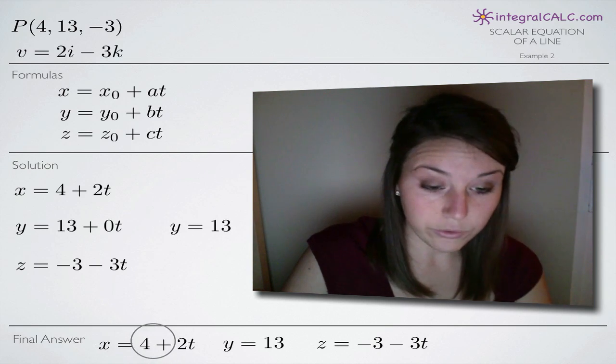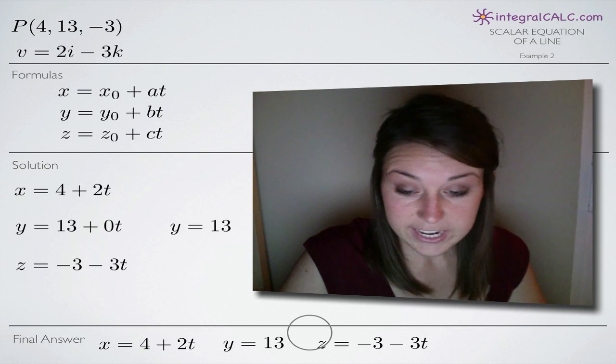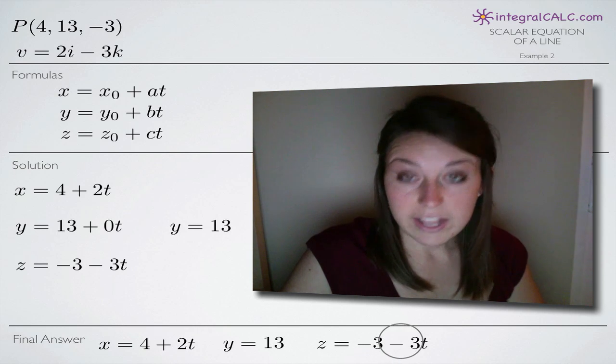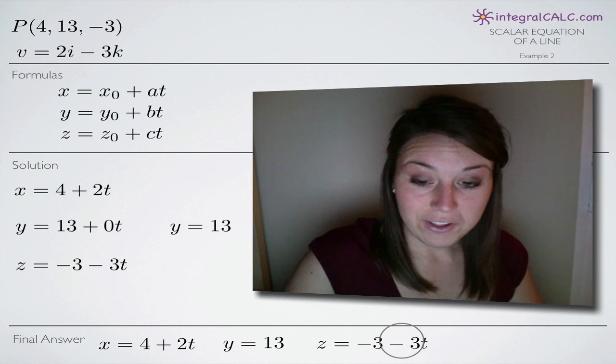So we put these three together and together they constitute our scalar equations for this line. So we end up with x equals 4 plus 2t, y equals 13 and z equals -3 minus 3t and that's our final answer.